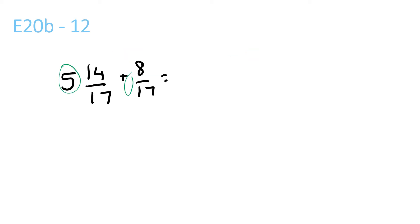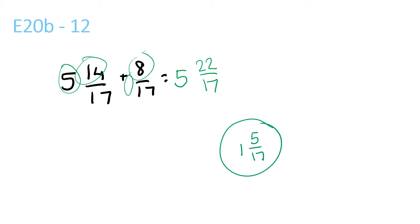5 plus nothing is 5, and 5 plus 8 is 22. The bottom stays the same. 17 goes into 22 once with a remainder of 5 over 17. So 1 and 5 over 17 plus 5 is equal to 6 and 5 over 17.